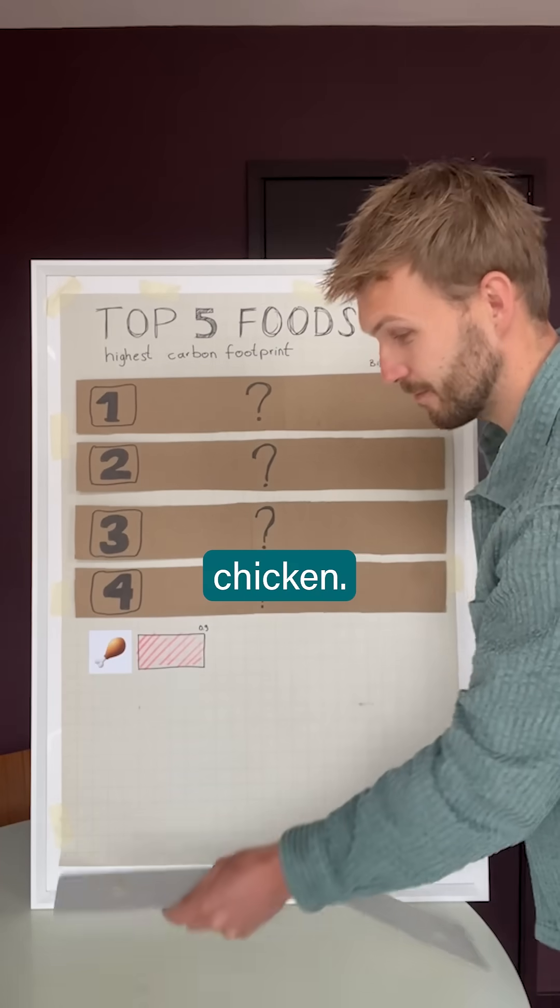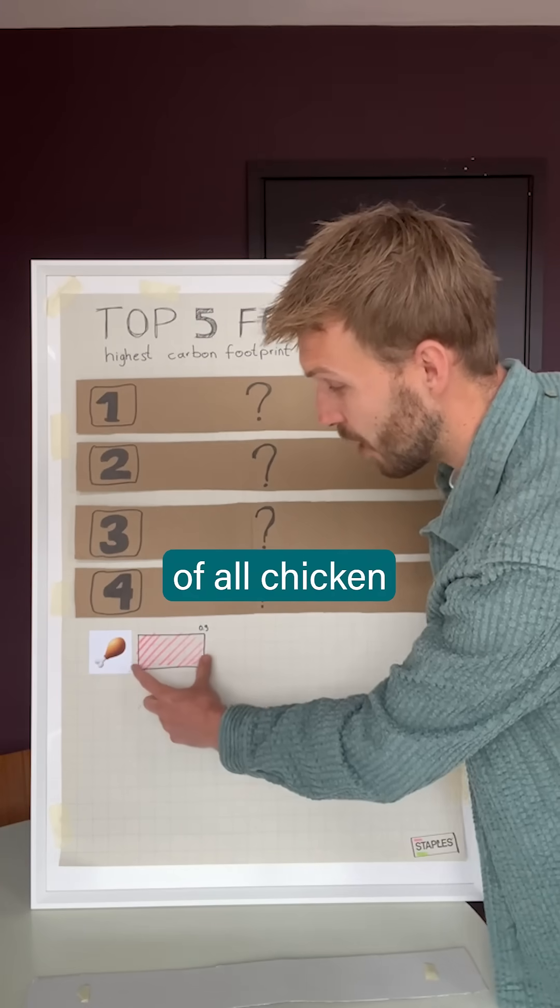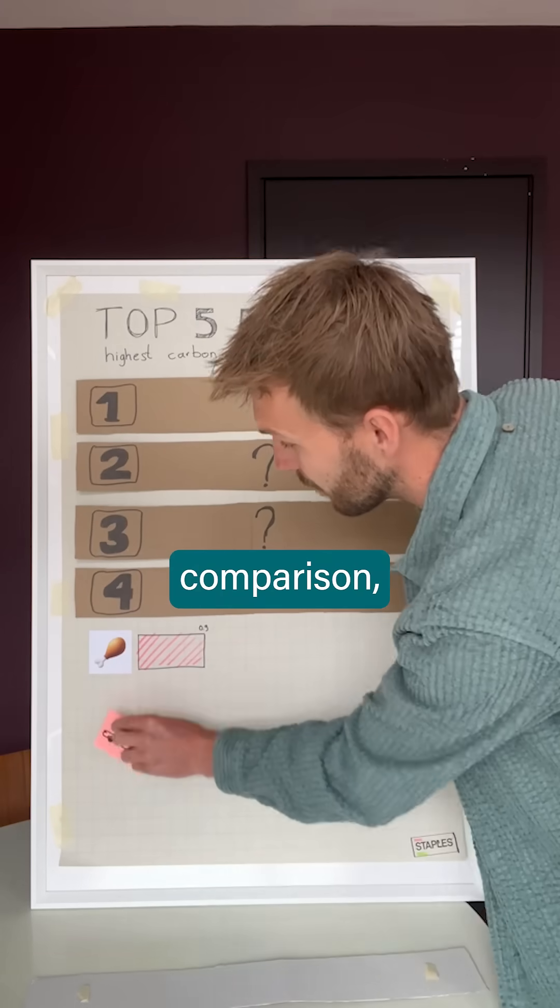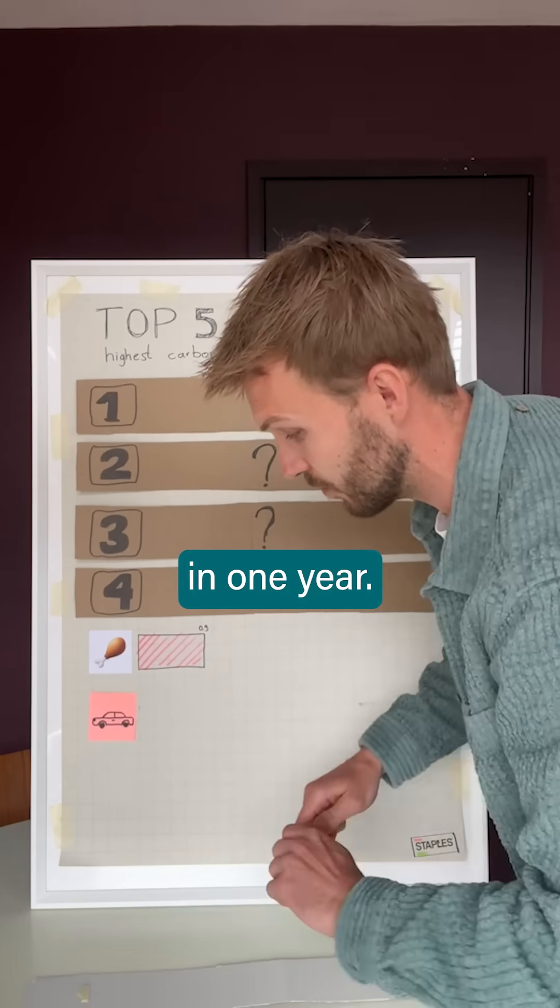So at five we've got chicken. This is the carbon footprint of all chicken meat in the world for one year. It's a bit abstract, so for comparison, let's add the footprint of all cars in one year.